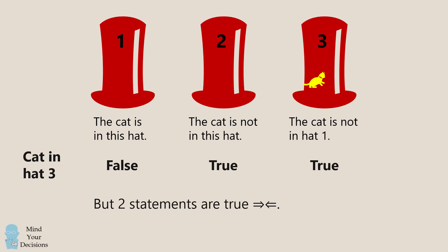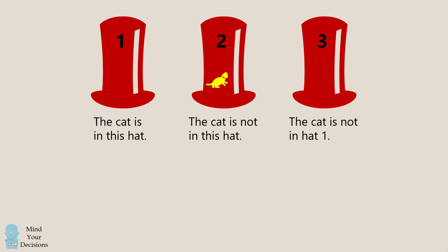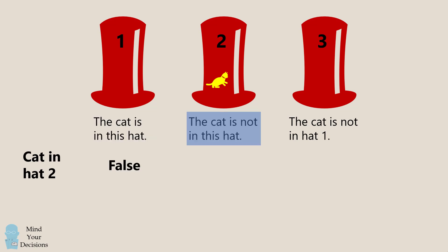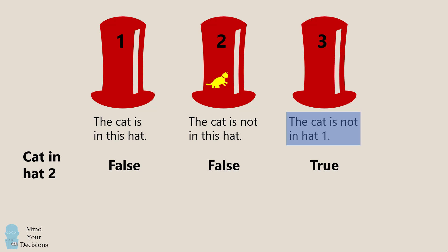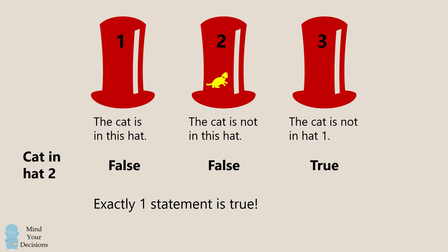We finally consider if the cat was in hat 2. In that case, the first statement will be false. The second statement will also be false. And the third statement — well, this statement will be true, because the cat is not in hat 1. Therefore, we have exactly one statement that's true. This case is therefore the answer. The answer is B: the cat is in hat 2.